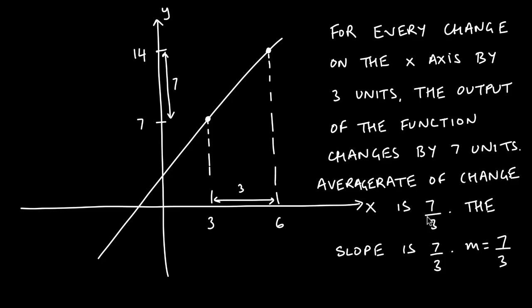Another way to express the same information: the slope of this line is seven-thirds, and m equals seven-thirds. Going forward, whenever you see 'find the average rate of change,' the question is simply asking you to find the slope of the function. If someone says 'find m,' we mean find the slope.